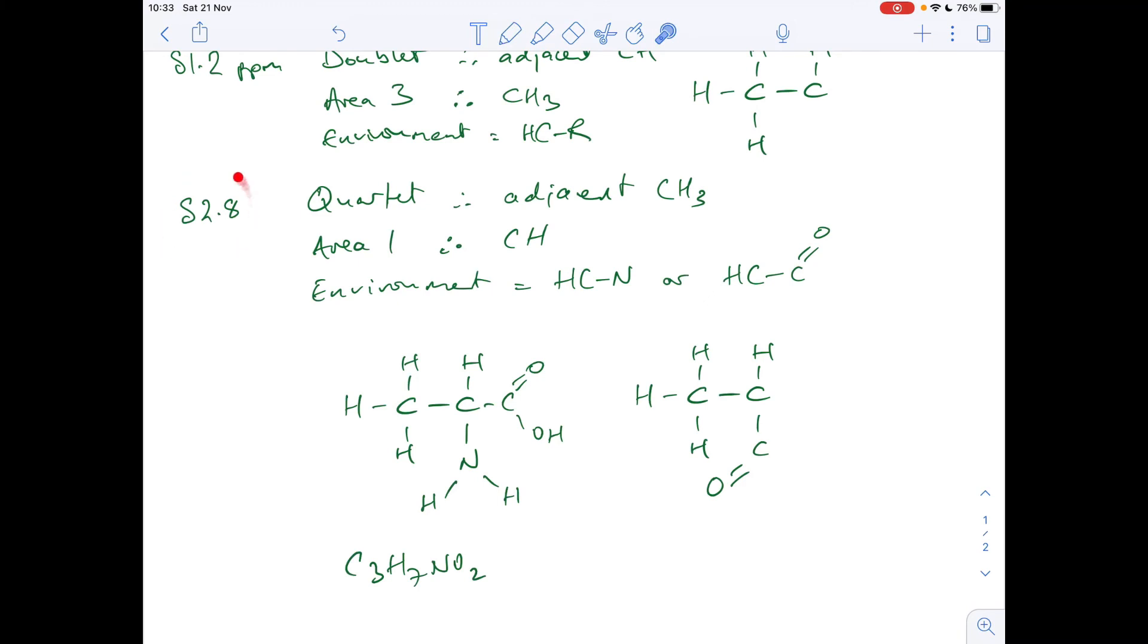So if we go back to this delta 2.8 peak, remember we had the two options there. So remember that's caused by this proton here. It's got that adjacent CH3. We're happy with that. The environment could be H2C to N. Well, we've got that there, H2C to N. It could have also been H2C to C double bond O. Well, it's that as well. So that works. And so that is actually the right answer.